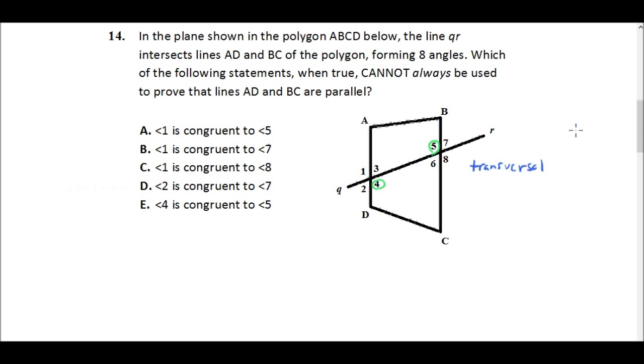A transversal is a line that intersects two other lines at two separate points. So transversals can be used to prove lines parallel. I'm going to show you a couple of ways that they can do that. So the question is, which of the following statements, when true, cannot always be used to prove that lines AD and BC are parallel? So we're wondering, is AD and BC parallel? Well, let's go through each of these statements, because we have to eliminate. So let's start at the bottom.